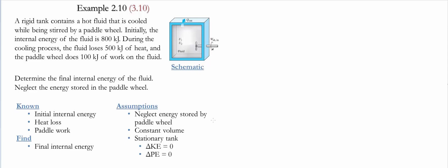In this example there is a rigid tank which contains a hot fluid being cooled and stirred by a paddle wheel. Initially, the internal energy of the fluid is equal to 800 kilojoules. During the cooling process the fluid loses 500 kilojoules of heat, and the paddle adds 100 kilojoules of work to the fluid. We need to determine the final internal energy of the fluid.